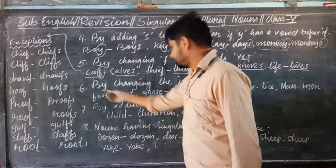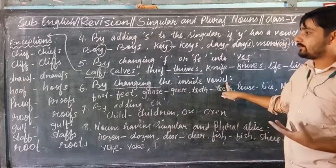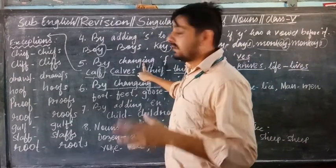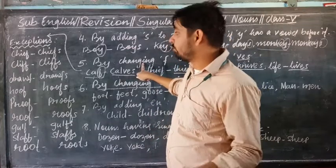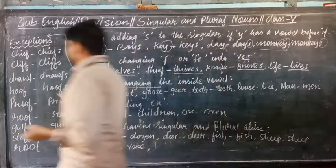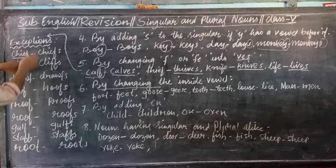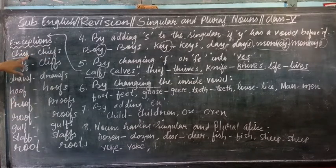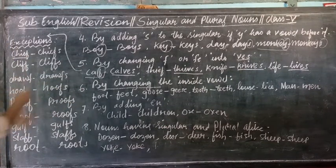However, there are some exceptions in point number 5. Some words do not follow this rule. For example, 'chief' ends in F but we do not change it to VES. Words like chief, roof, proof and others like these — we just add S instead of changing to VES.